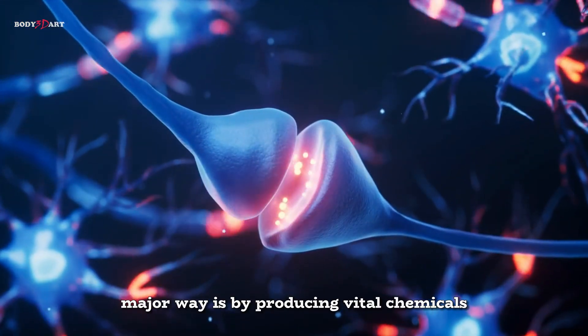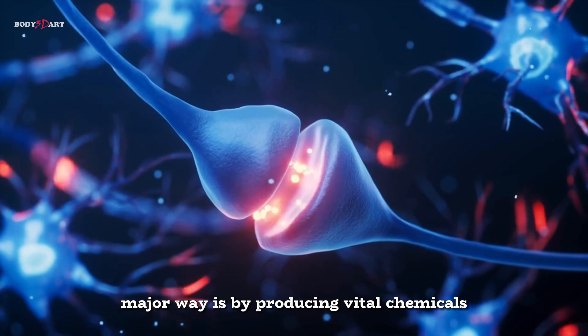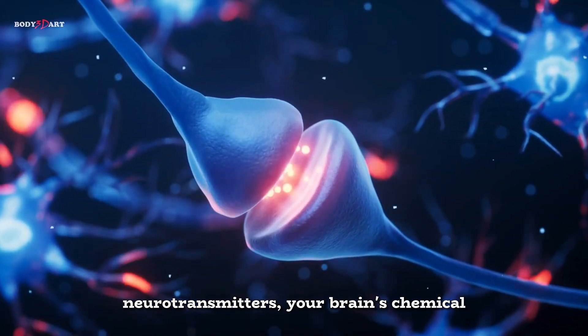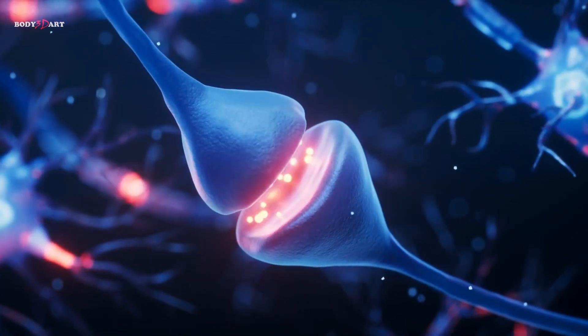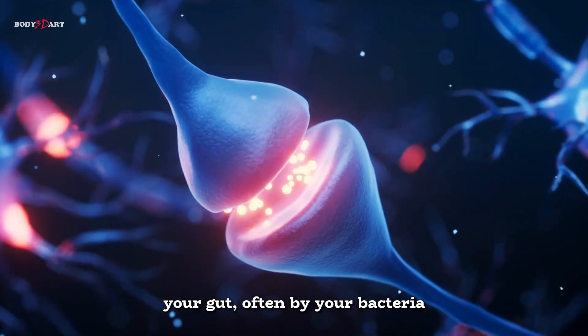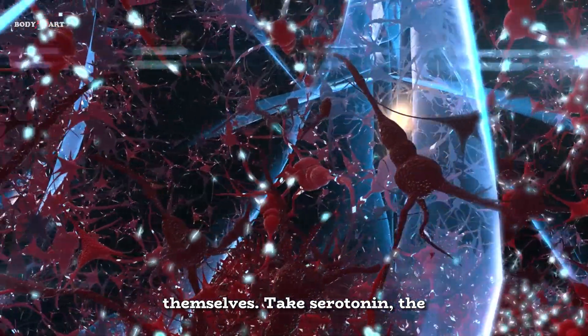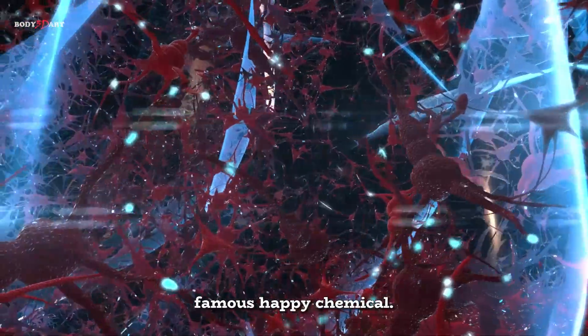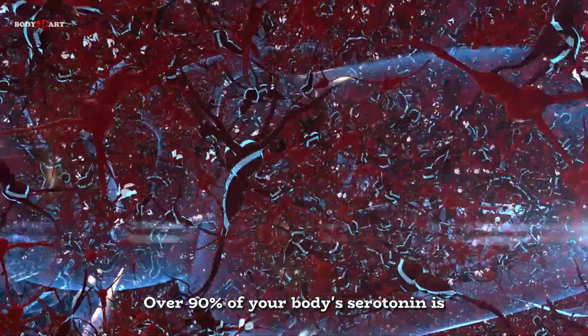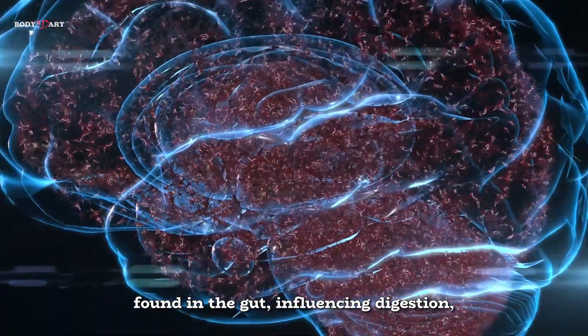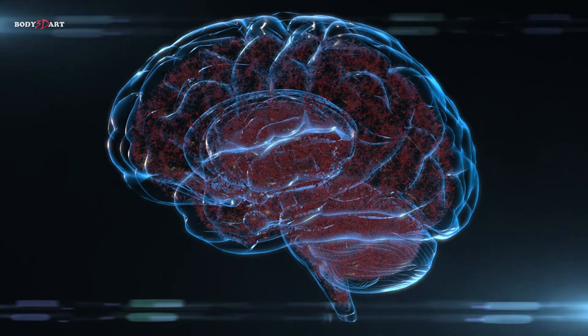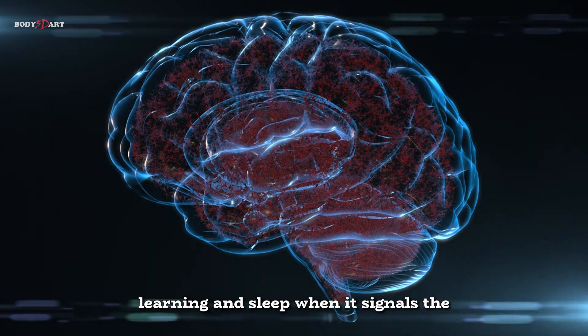How? One major way is by producing vital chemicals that talk to your brain. Think about neurotransmitters - your brain's chemical messengers for mood and emotion. Surprisingly, many are produced right in your gut, often by your bacteria themselves. Take serotonin, the famous happy chemical. Over 90% of your body's serotonin is found in the gut, influencing digestion, but also playing a massive role in mood, learning, and sleep when it signals the brain.